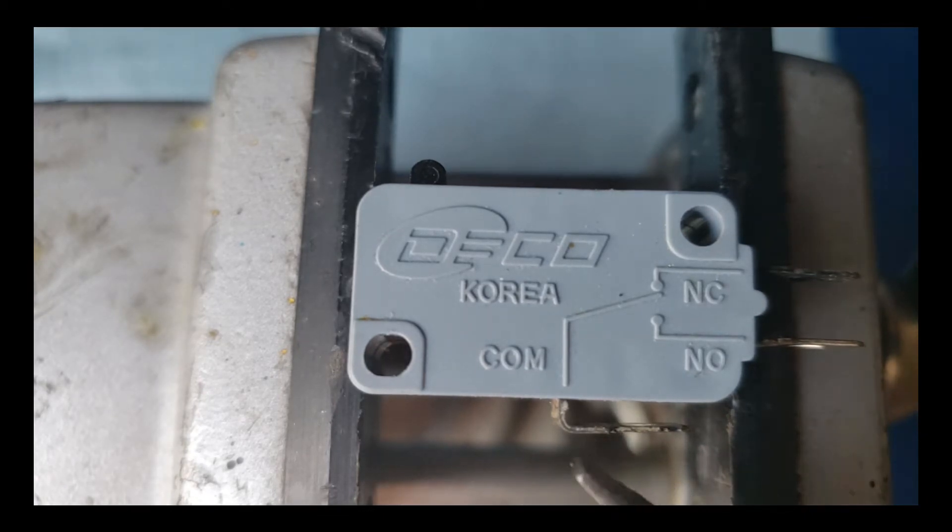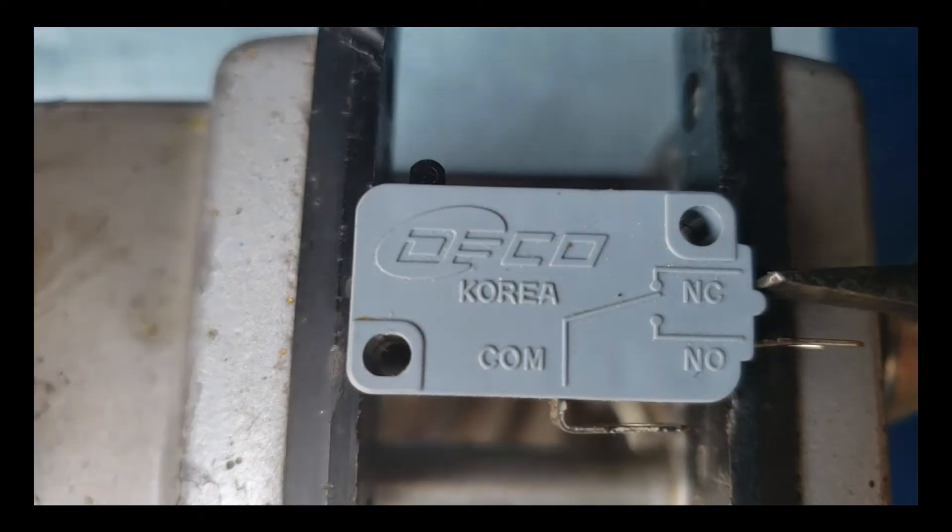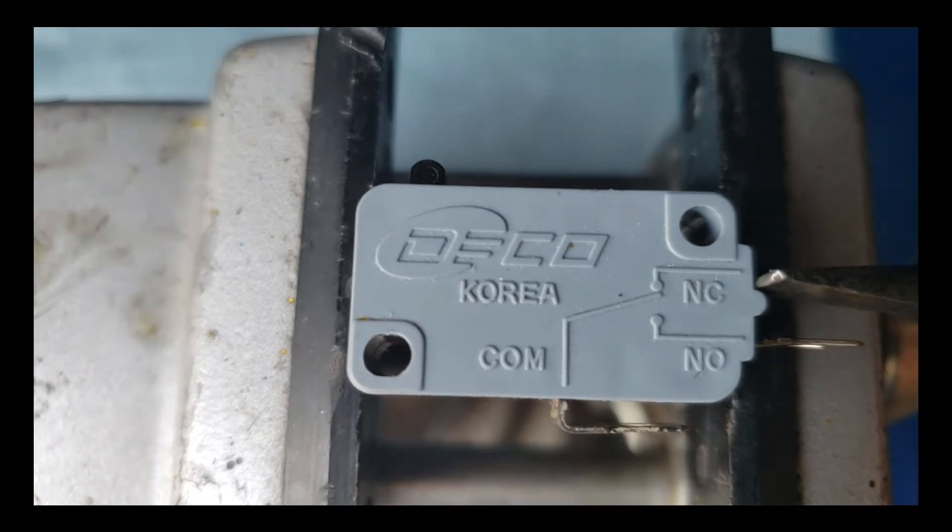If you take a look, this contact right here is your common, so you're always going to have a wire hooked to this terminal right here. Then if you look right here, you've got a normally closed, that's what NC is, meaning that if you have a wire hooked here and hooked to the common, it's going to normally be closed when the microswitch is not actuated, when it's just in its relaxed position.